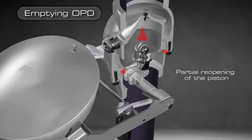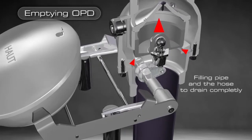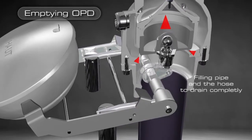By eliminating the hydraulic pressure, the piston partially reopens. It thus allows the filling pipe and the hose to drain completely.